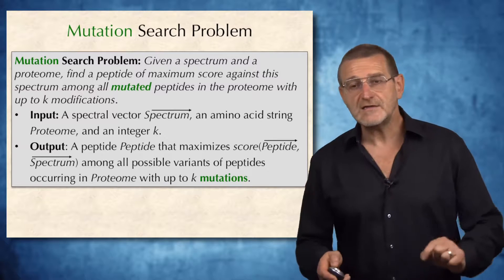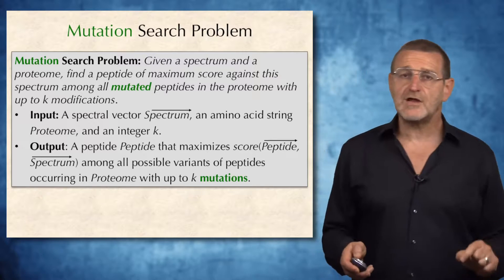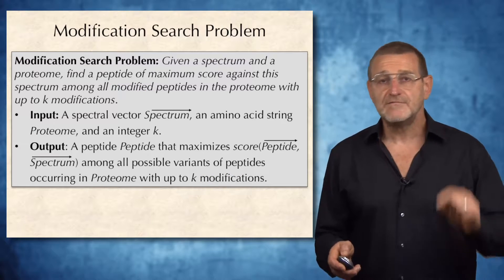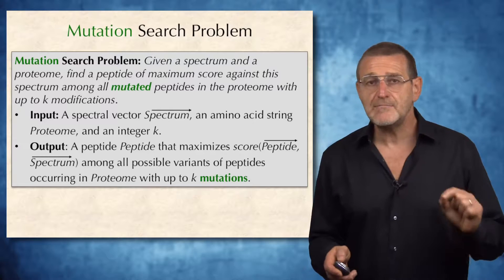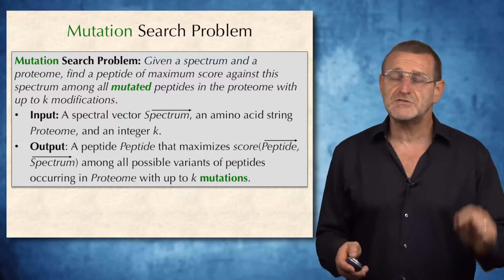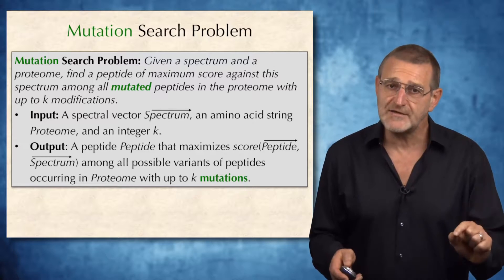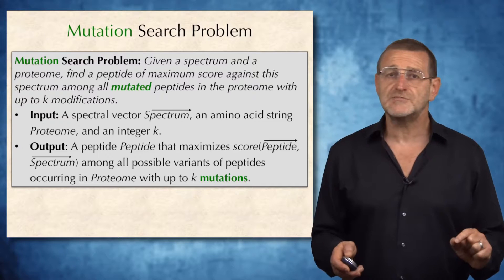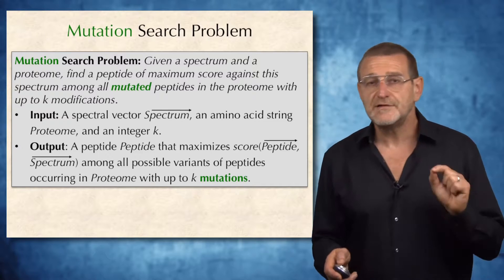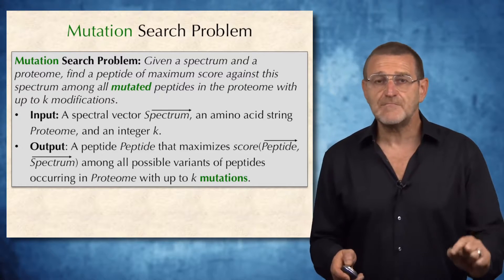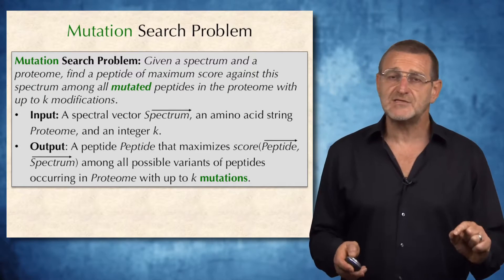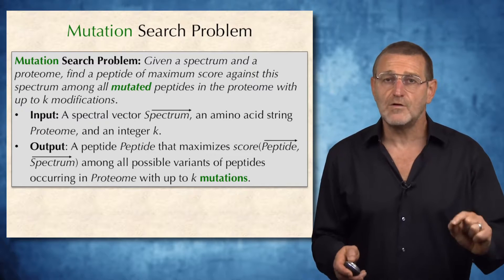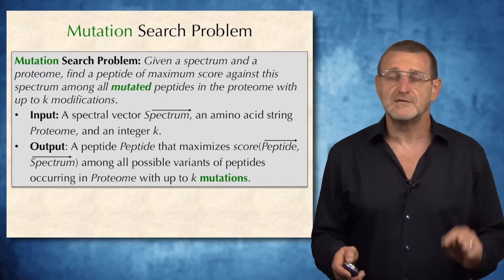And if we figure out how to search for modified peptides, we will immediately be able to search for mutated peptides as well, because the mutation search problem results from simply substituting the word 'modification' for 'mutation', as shown in this slide.